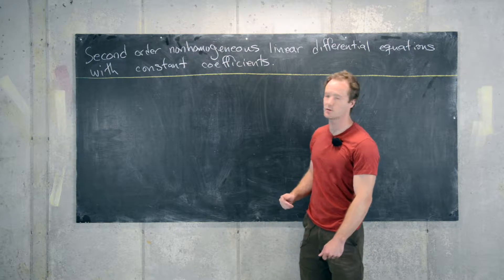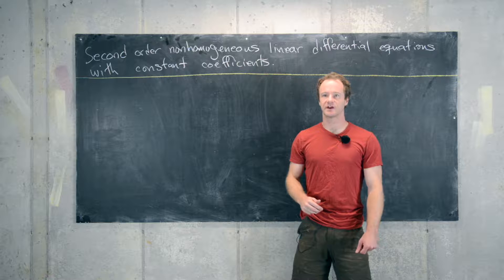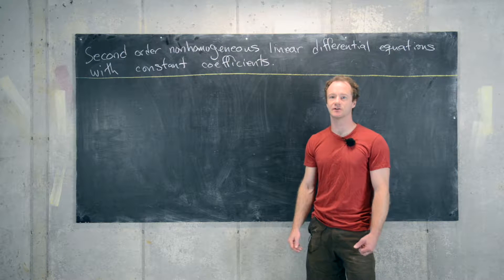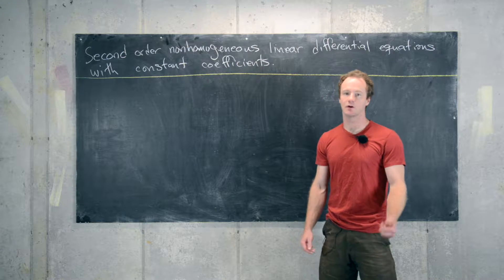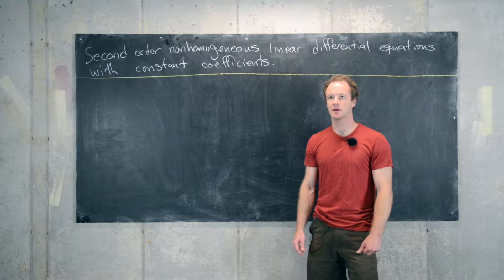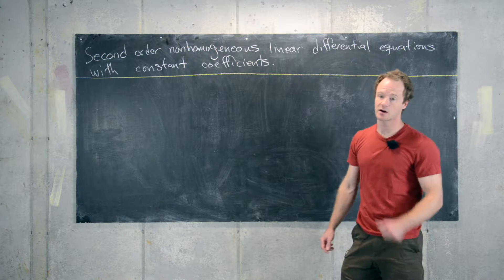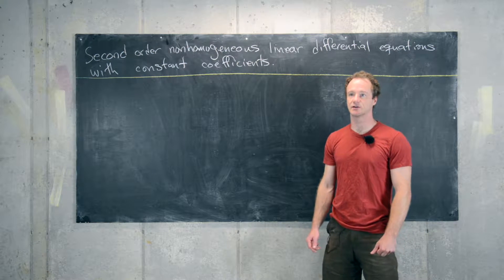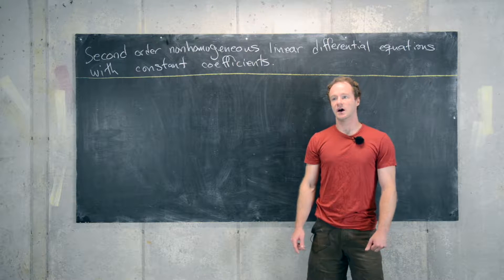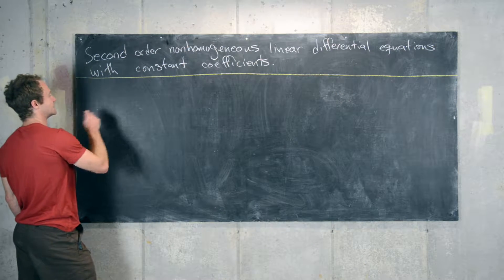In this video we're going to look at second-order non-homogeneous linear differential equations with constant coefficients, and some strategies for solving very special cases of these. So let's break down what this means. Second-order differential equations are those where the highest derivative of the dependent variable is the second derivative, so y double prime would be the largest derivative you would see. Non-homogeneous means instead of having zero on one side of the equation, you have something that's not zero. Linear means that all of the dependent variable and its derivatives are wrapped up in linear functions. And constant coefficients means the coefficients of the dependent variable and its derivatives are constants. We want to look at differential equations of this form.